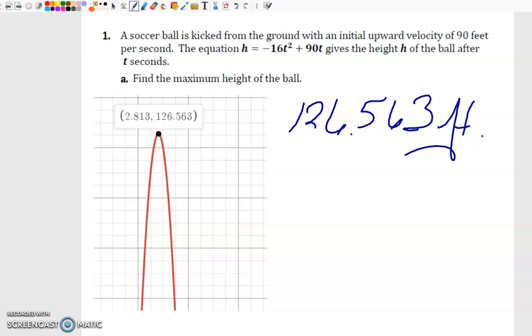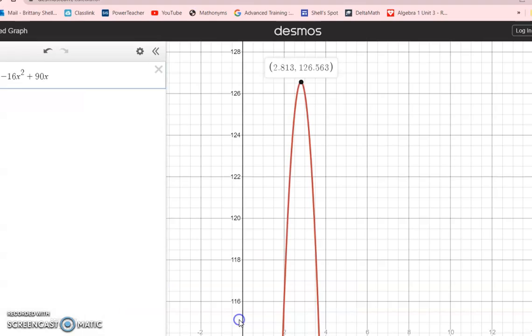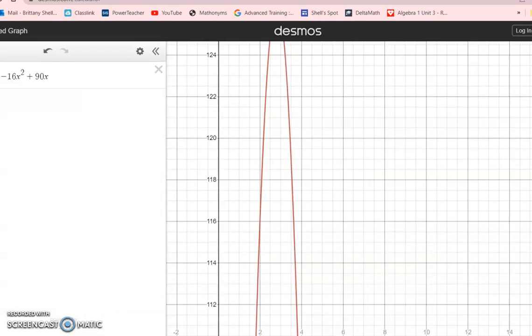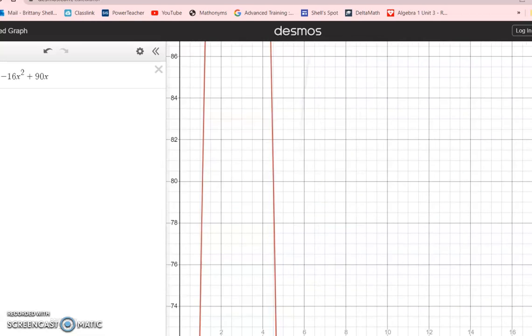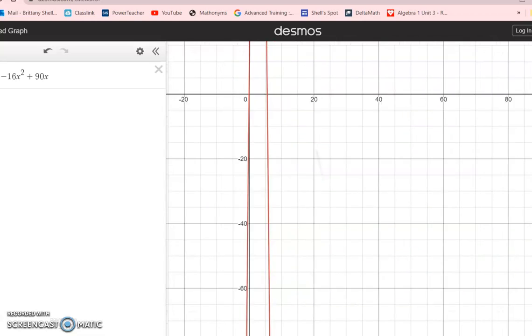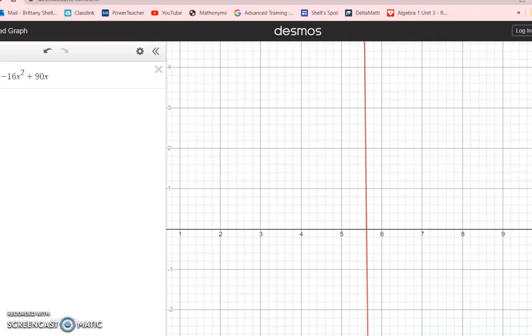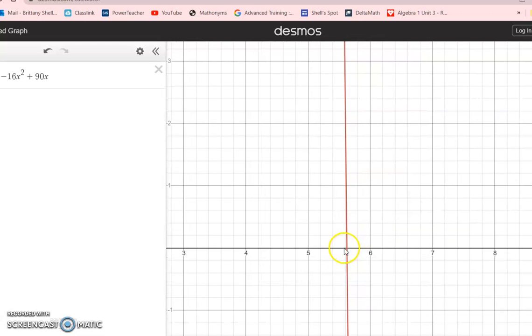So there is my maximum height. Just to make sure I answer the question, put feet on it because that is our units. Remember anytime you're doing real world applications you always have to include your units. Alright, so part b says how many seconds will it take for the ball to reach the ground? Now you come back over here to your graph and when it hits the ground that is looking for a root and or a zero because roots and zeros indicate x-intercepts.